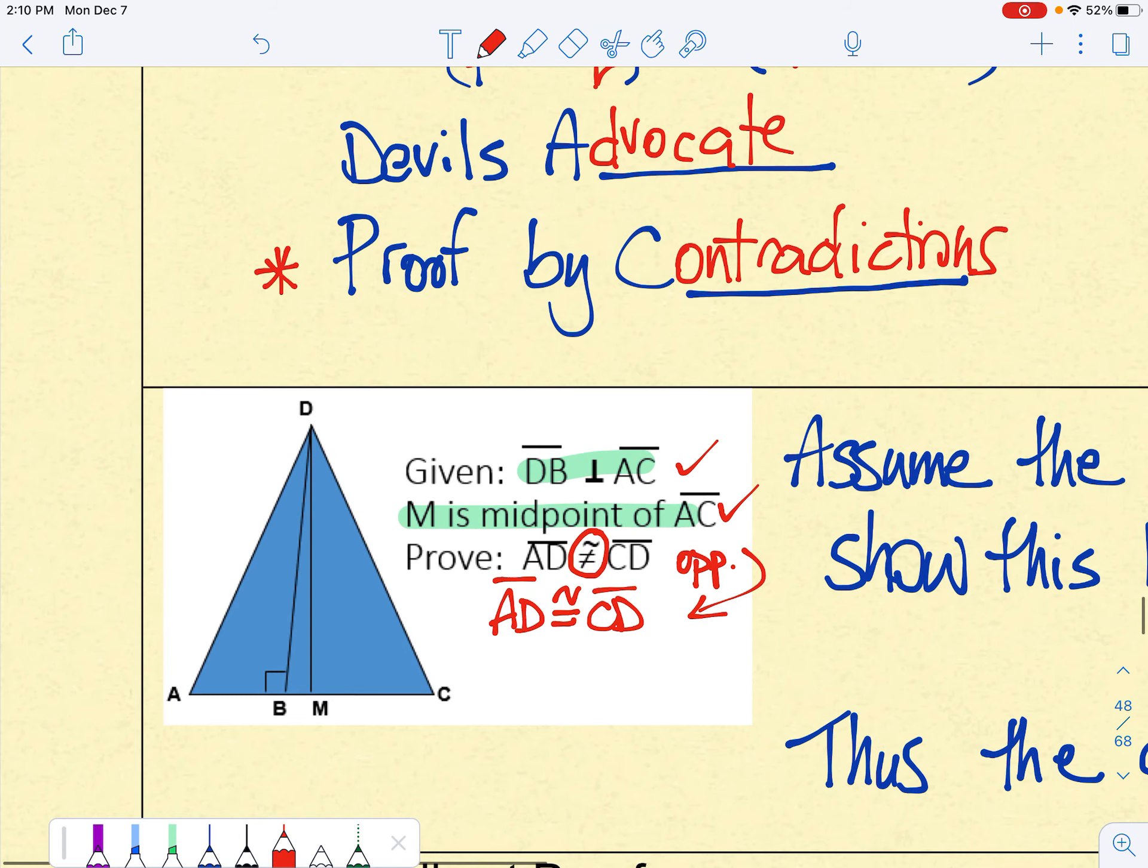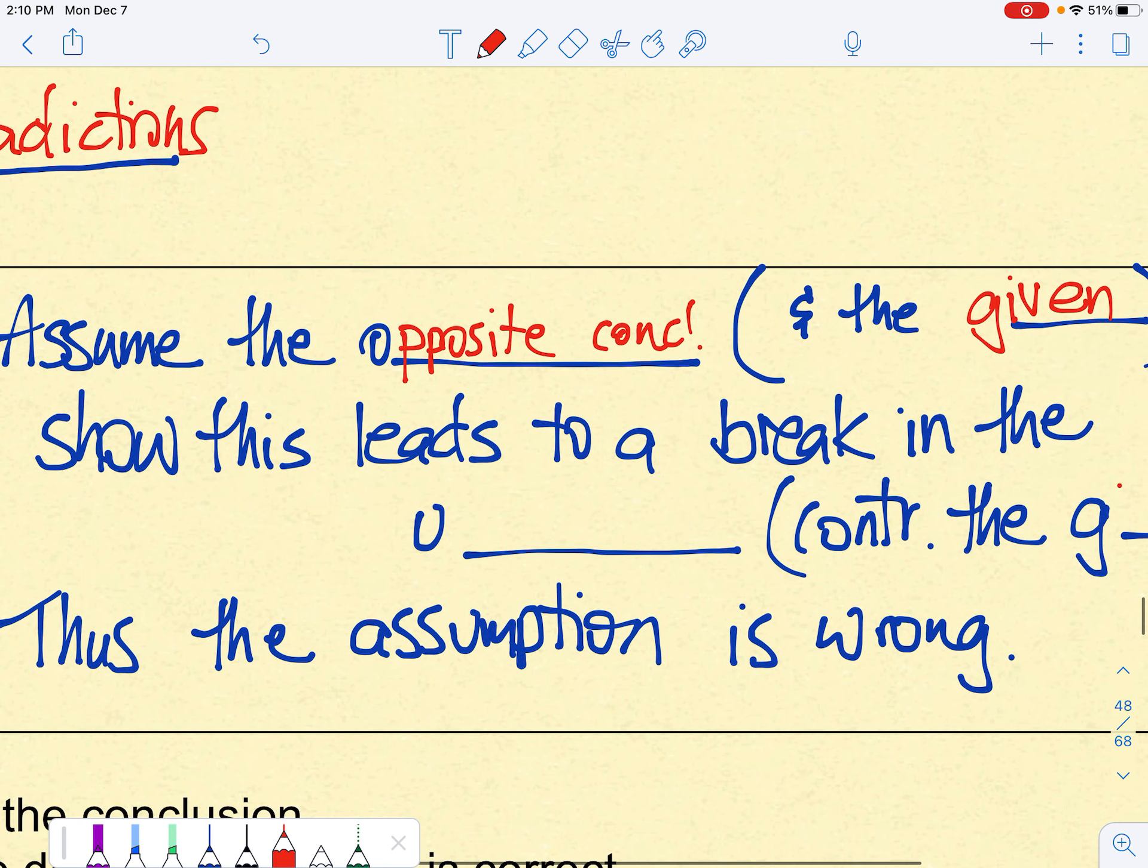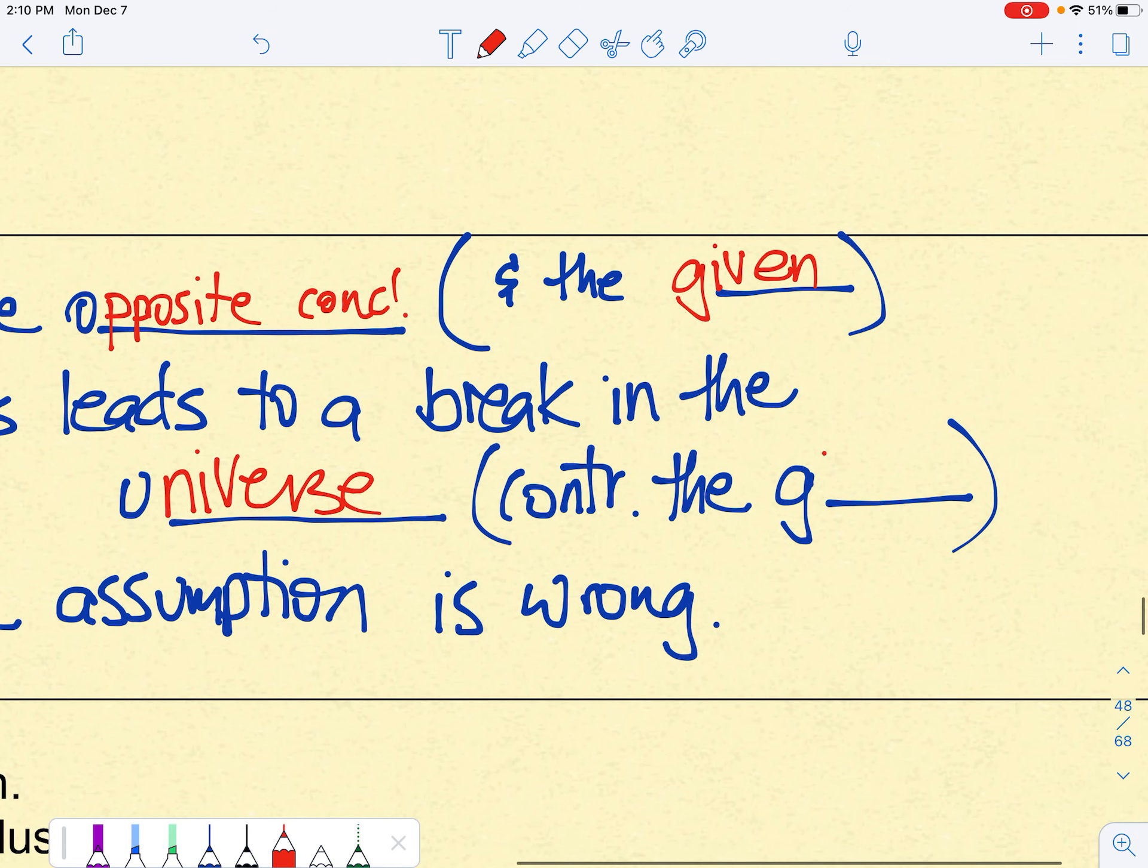Now, what that eventually is going to do is this is going to take us to what we would call a, some kids would say, a break in the universe. Technically, it's called a contradiction.